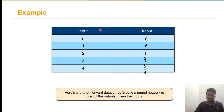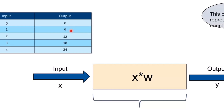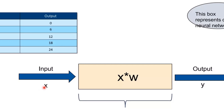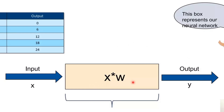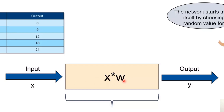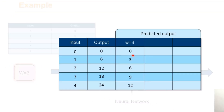Now consider another example: we build a neural network where inputs 0, 1, 2, 3, 4 correspond to outputs 0, 6, 12, 18, and 24. The input x gets multiplied by weight w to produce the output. We start training by choosing a random value w = 3. With w = 3, the outputs become 0, 3, 6, 9, and 12 — that is, 3×0=0, 3×1=3, 3×2=6, 3×3=9, 3×4=12.